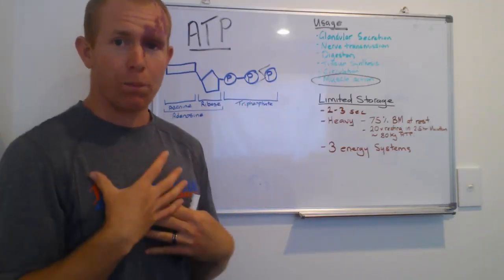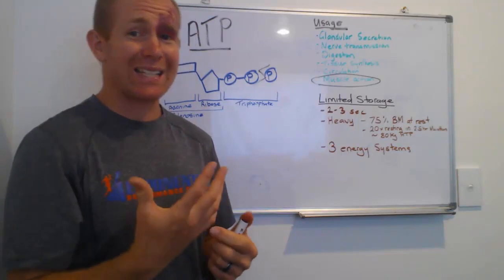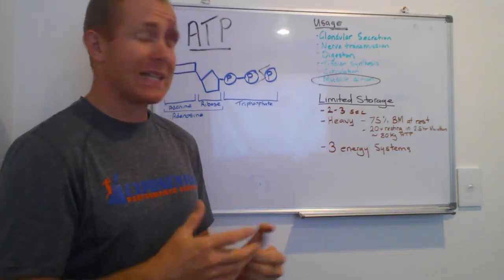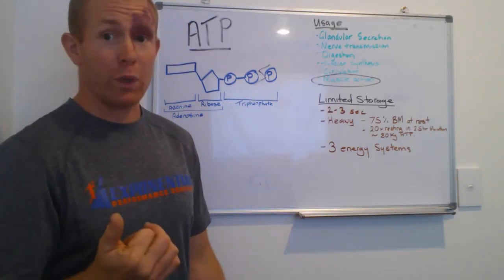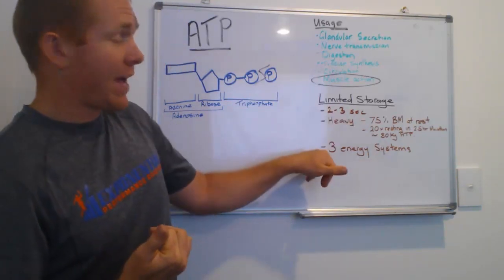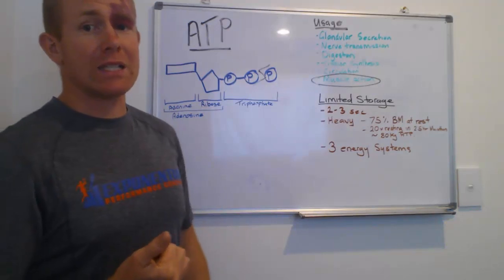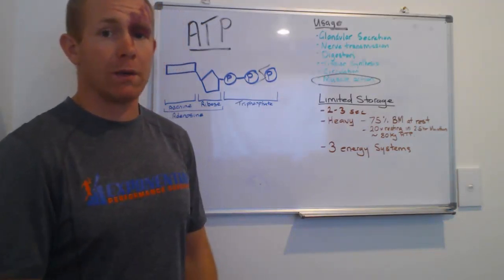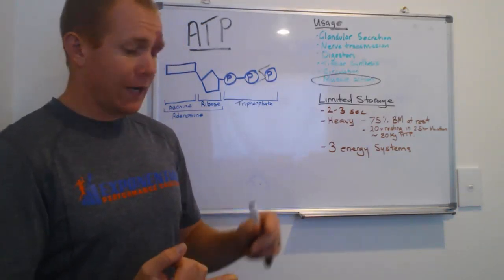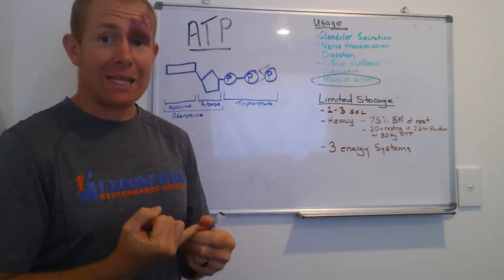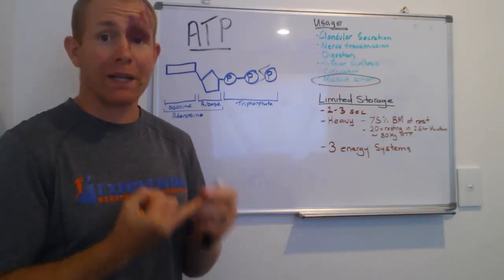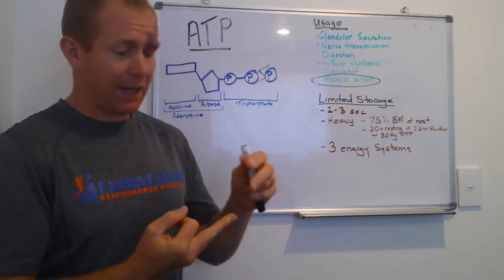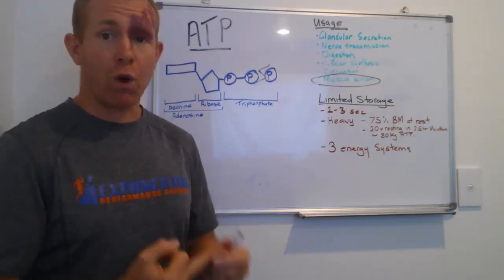Because if we just had our normal body weight, plus another 80 kilos of ATP on there just to function on a day-to-day basis, then we would be struggling to move. And that's why our three energy systems are super important. First of all, we've got our anaerobic ATP-PCR system. We've got our anaerobic glycolytic system. And finally, we've got our aerobic system.